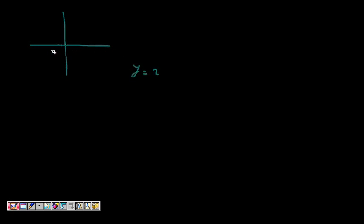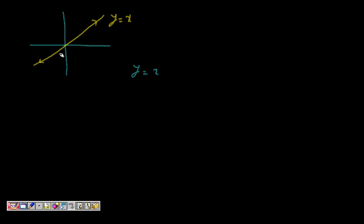Similar is the case with functions. If you look at some function, for example y equals x on the x and y axis — this function is continuous. When I drew this line, it goes everywhere till infinity on both sides. I drew it without lifting my pen; my pen was everywhere continuously, and that is how I get y equals x.